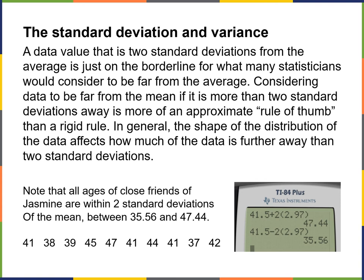When looking at standard deviation and variance, a data value that is two standard deviations from the average is on the borderline of what many statisticians would consider far from the average. If Jasmine's friends are three years older or younger than Jasmine, that's considered kind of average. Once we start getting beyond two standard deviations — about six years or so — you can say that's a much younger or older friend. When we consider data to be far from the mean, more than two standard deviations is more of an approximate rule of thumb than a rigid rule.